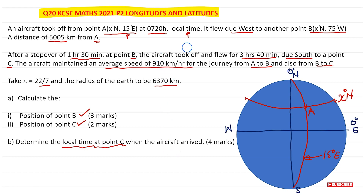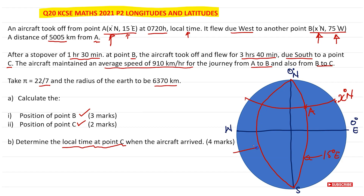The aircraft flew due west to point B at x degrees north, 75 degrees west. Notice that both A and B are at x degrees north — they share the same latitude. Now I draw the longitude for B at 75 degrees west from the prime meridian, and point B is where the latitude and that longitude cross each other.